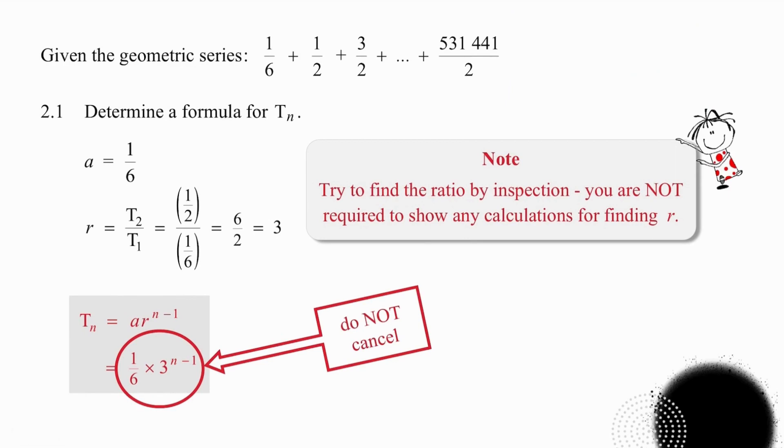The only challenge in this question, really, is the fact that you're working with a fraction. So your a value is 1 sixth. Your r value you can do by inspection. So if you look carefully, the easiest comparison is between second and third terms. You can see that you're simply multiplying the second term by 3. So by inspection, you can get to the r value of 3.